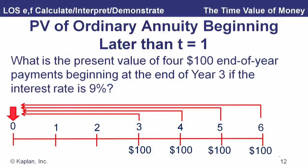Now what if we've got an annuity that doesn't start at period one or period zero? Here we've got a four-year annuity — $100 a year at the end of each year, beginning at the end of year three, and our interest rate is 9%. We could certainly do this the long way: this $100 comes at time three, so if we want the present value we take 1.09 cubed, then add that to 1.09 to the fourth, and so on.